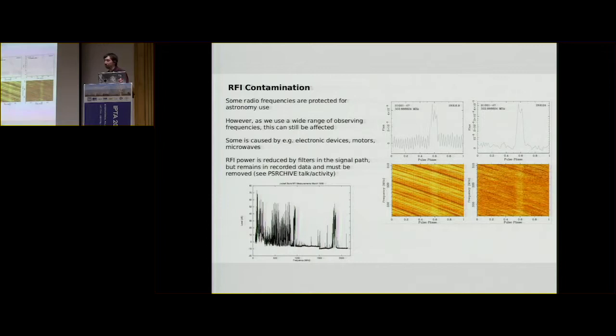RFI contamination can also be caused unintentionally. For example, car spark plugs can affect you at certain frequencies, mobile phones, obviously. Any kind of motors, really. So you can even have self-generated stuff at the telescope from the motors that steer your telescope. So just to give you an idea, and this is probably going to be quite hard to see, but I mean, this plot goes from kind of tens of megahertz up to thousands of megahertz.